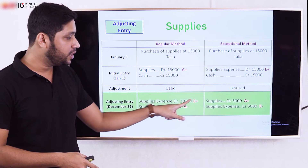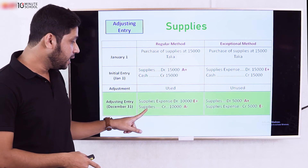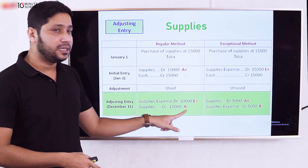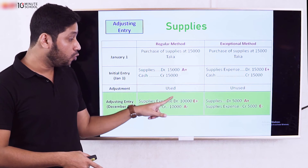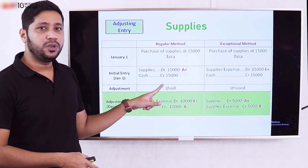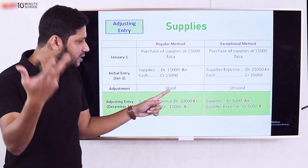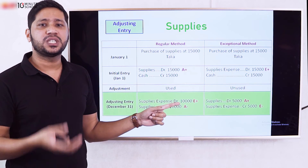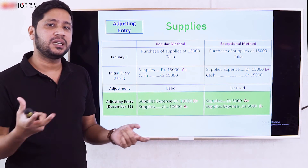When Supplies is recorded as an asset initially, the adjusting entry reduces the asset as it is used. The asset is used up over the period, so the adjusting entry reflects the used portion as an expense.